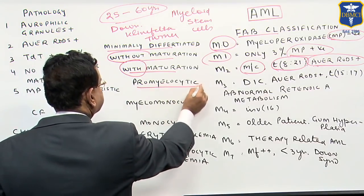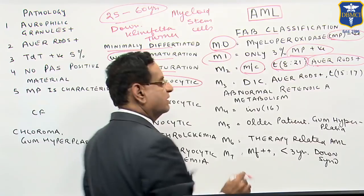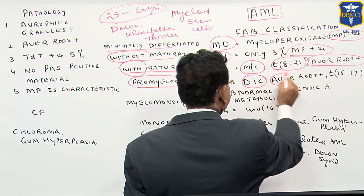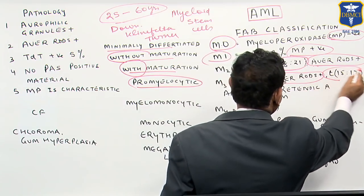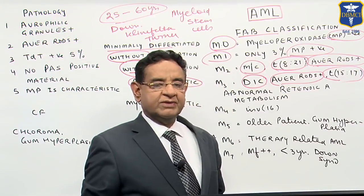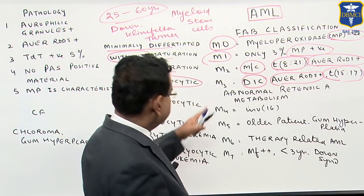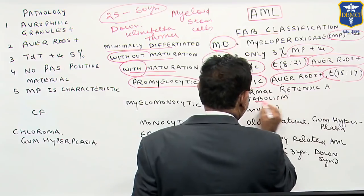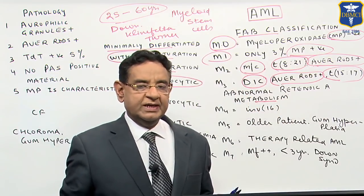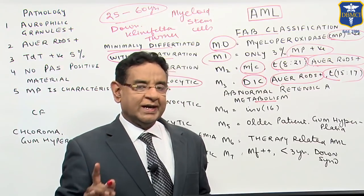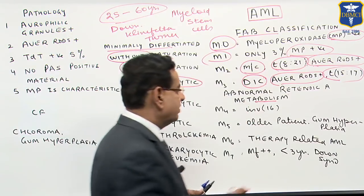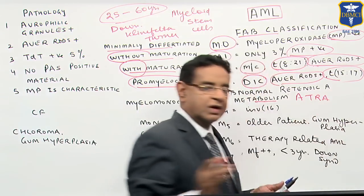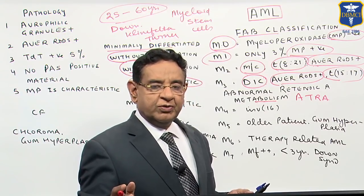M3 is promyelocytic AML — a very, very important point. In M3, DIC is common, Auer rods are present, and classically we see t(15;17) translocation. In the M3 variety, there is an abnormality in retinoic acid metabolism — that is, vitamin A metabolism is abnormal. That is why in the treatment of M3, we use ATRA, which is all-trans retinoic acid.